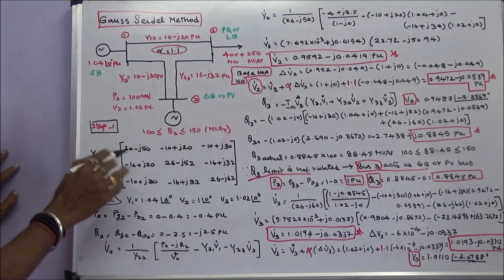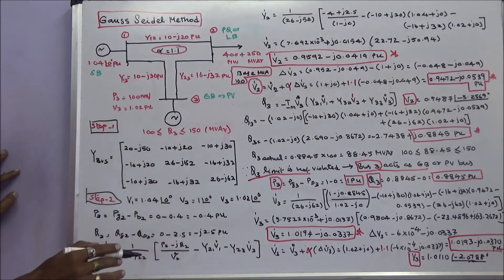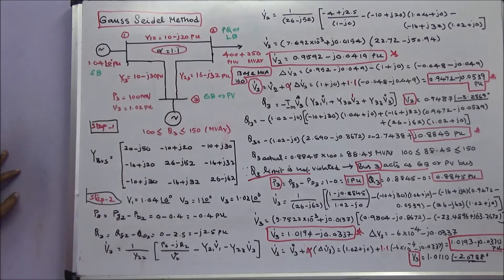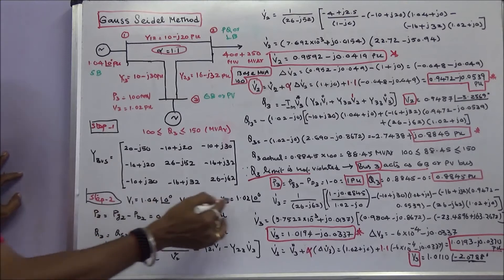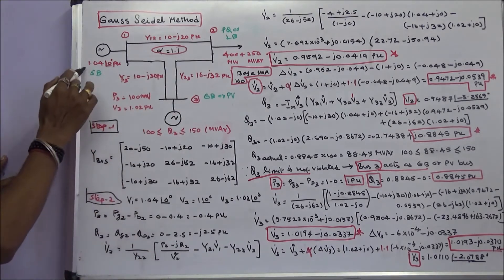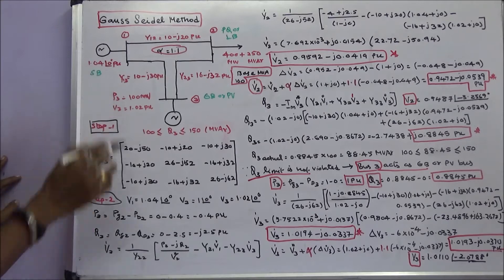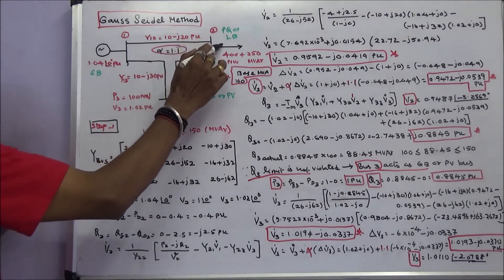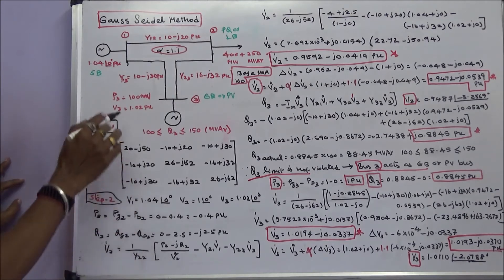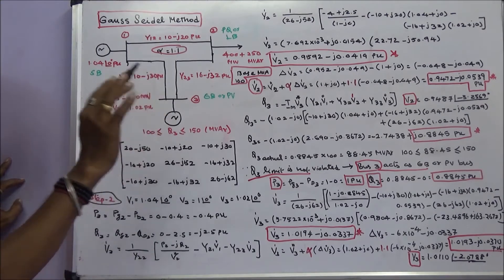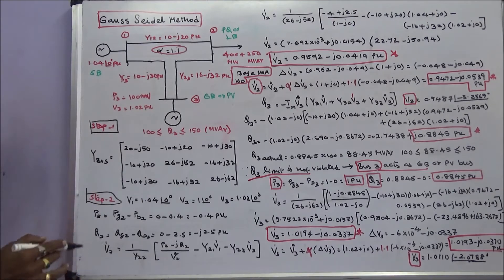The first step is to form the Ybus matrix. This is the Ybus matrix of the system. The second step is to initialize the bus voltages: V1 = 1.04∠0° per unit, V2 = 1∠0° per unit, and V3 = 1.02∠0° per unit.